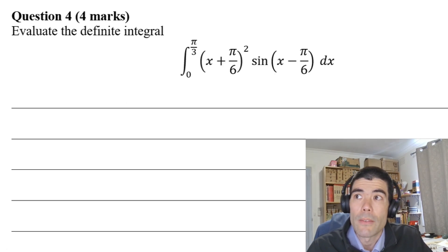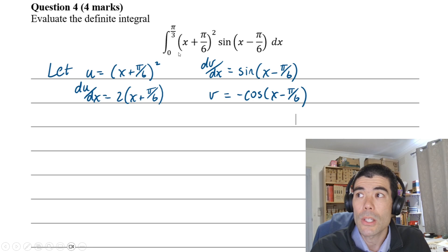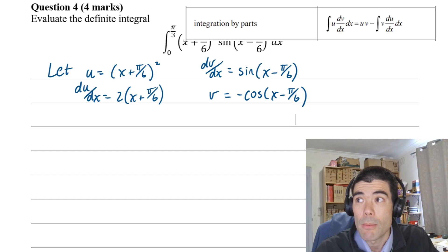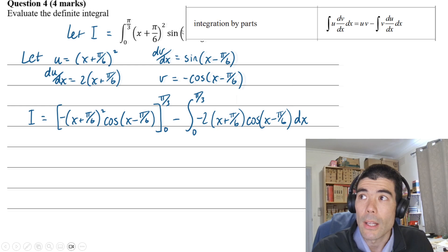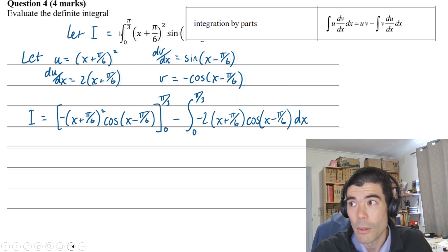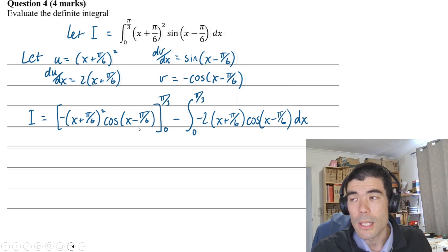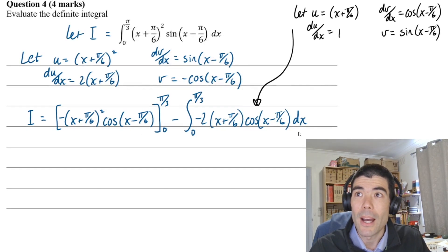As a first step, we want to choose u and dv/dx. In this case, we want to choose u as this bracket squared, because when we differentiate it, it's going to become simpler. It's going to become linear. Whereas the sine function, once we integrate that, it doesn't really become any more complex. We choose u to be the one that after we differentiate it, it's going to become simpler. Then we apply our integration by parts formula as it is on your formula sheet. We get u times v minus the integral of du/dx times v. We can sub into this term straight away, but for the right integral, we're going to have to do integration by parts again.